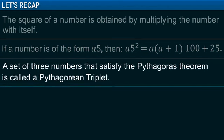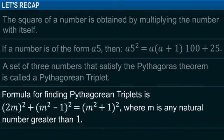A set of three numbers that satisfy the Pythagoras theorem is called a Pythagorean triplet. The formula for finding Pythagorean triplets is 2m whole square plus m square minus 1 whole square is equal to m square plus 1 whole square, where m is any natural number greater than 1.